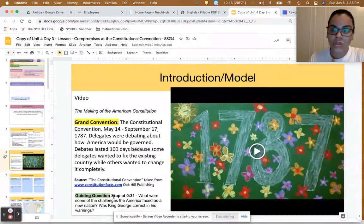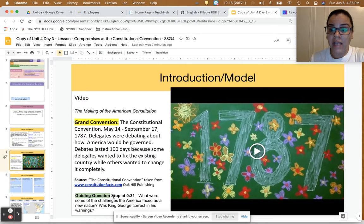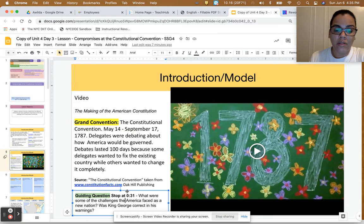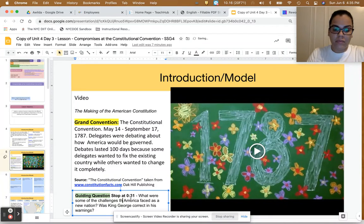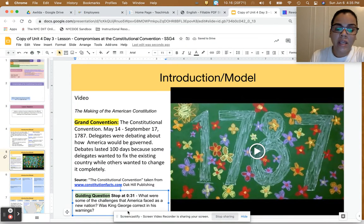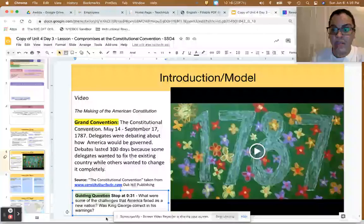Students can listen to the video in its entirety once and then come back and listen to it a second time where you provide stopping points. So, for the first stopping point, the question is, what were some of the challenges that America faced as a new nation? Was King George correct in his warnings?